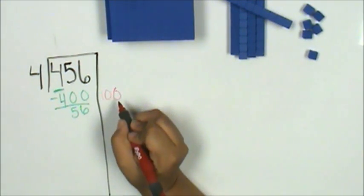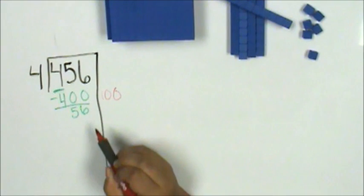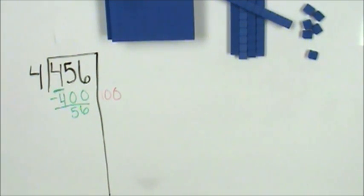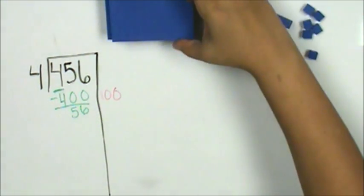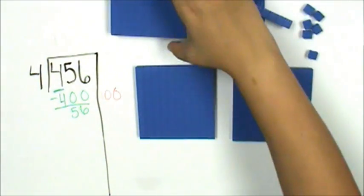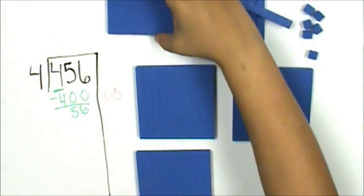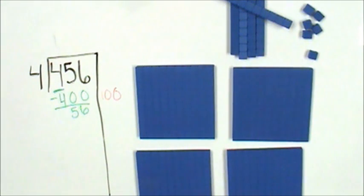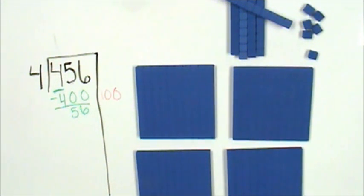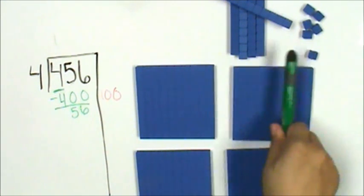4 times 100 was 400 and when I subtracted I was left with 56. Let's see how it looks with base 10 blocks. Here's 100, 200, 300, 400. I have 4 groups and each group has 100. I have 56 left.